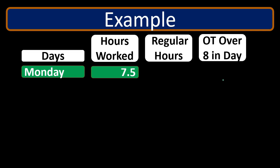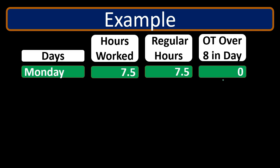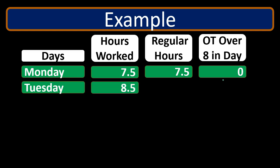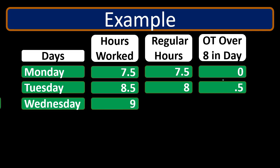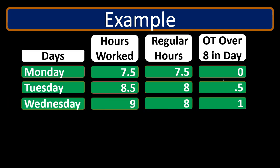For example, on Monday if 7.5 hours were worked in the day, all 7.5 hours are regular — no overtime since we're not over eight hours. On Tuesday, 8.5 hours worked means eight hours of regular pay and 0.5 hours of overtime. On Wednesday, nine hours worked gives eight hours of regular pay and one hour of overtime.